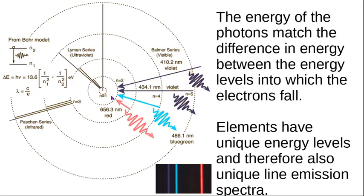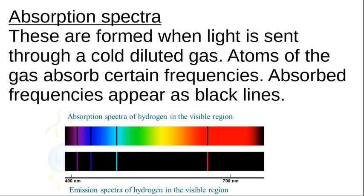All elements have unique energy levels and a unique line emission spectrum. When you heat up the element, it gets excited and the electrons fall back, producing these line emission spectra as light is emitted.